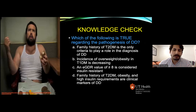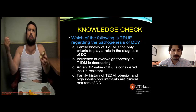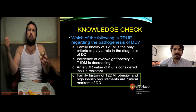Quick knowledge check: which of the following is true regarding the pathogenesis of double diabetes? A) family history of type 2 is the only criteria; B) incidence of overweight and obesity in type 1 is decreasing; C) an eGDR ≥8 is considered insulin resistant; or D) family history of type 2, obesity, and high insulin requirements are all clinical markers of double diabetes. The answer is D — all of these characteristics play a major role in the pathogenesis of double diabetes.